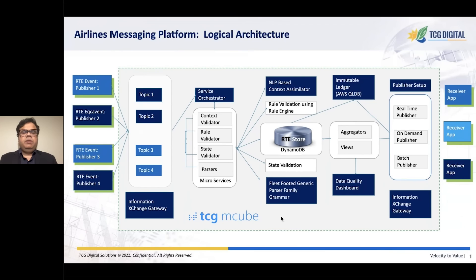This framework can be configured to receive messages from multiple upstream sources in various data formats like XML, JSON, or even text. It can also publish curated messages to downstream systems.